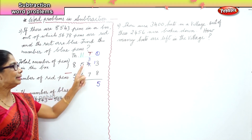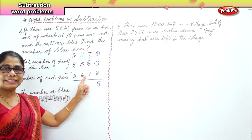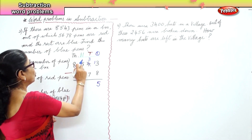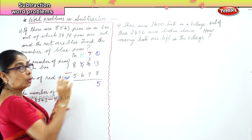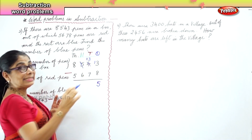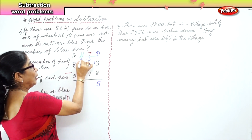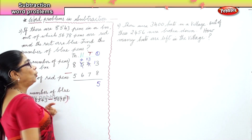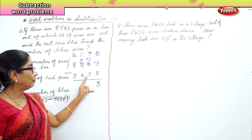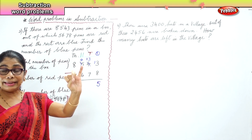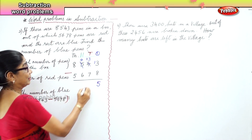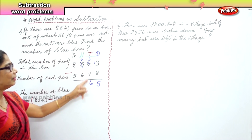Now we have three tens minus seven tens. Seven is bigger than three, so we borrow one from the hundreds. From five hundreds, take away one — you get four. You have thirteen tens, take away seven: after seven, eight, nine, ten, eleven, twelve, thirteen — thirteen take away seven is six.